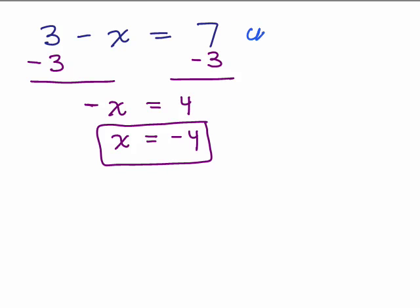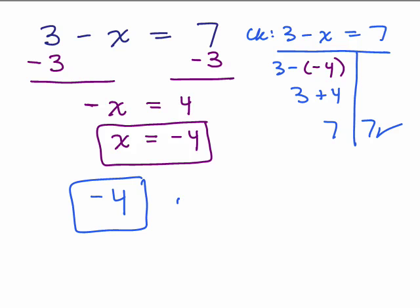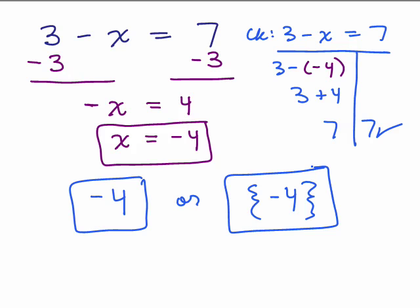Now let's check: 3 minus x equals 7, plugging in negative 4 for x. So 3 minus negative 4 is the same thing as 3 plus 4, which is 7. That's how you know that's the correct answer. The correct answer is negative 4, and you could use braces or put a box around your answer.